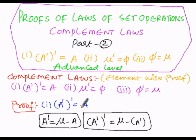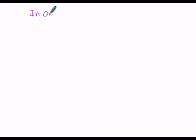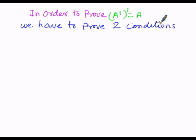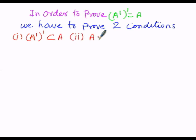In order to prove (A')' = A, first we have to prove that (A')' is a subset of A, and in the second case we have to prove that A is a subset of (A')'. So the two conditions are: first, (A')' ⊆ A, and second, A ⊆ (A')'.